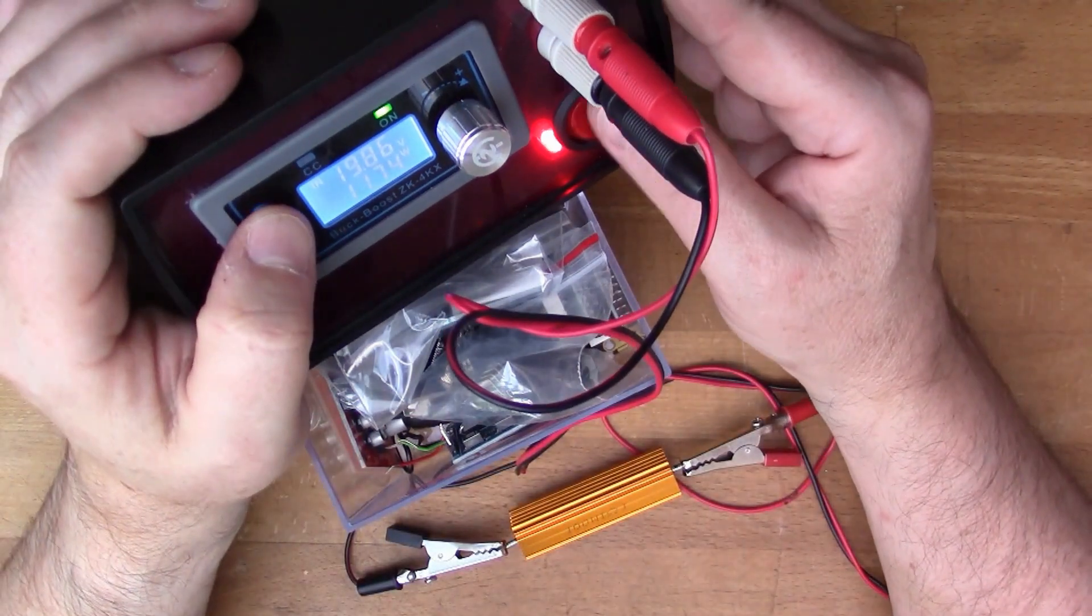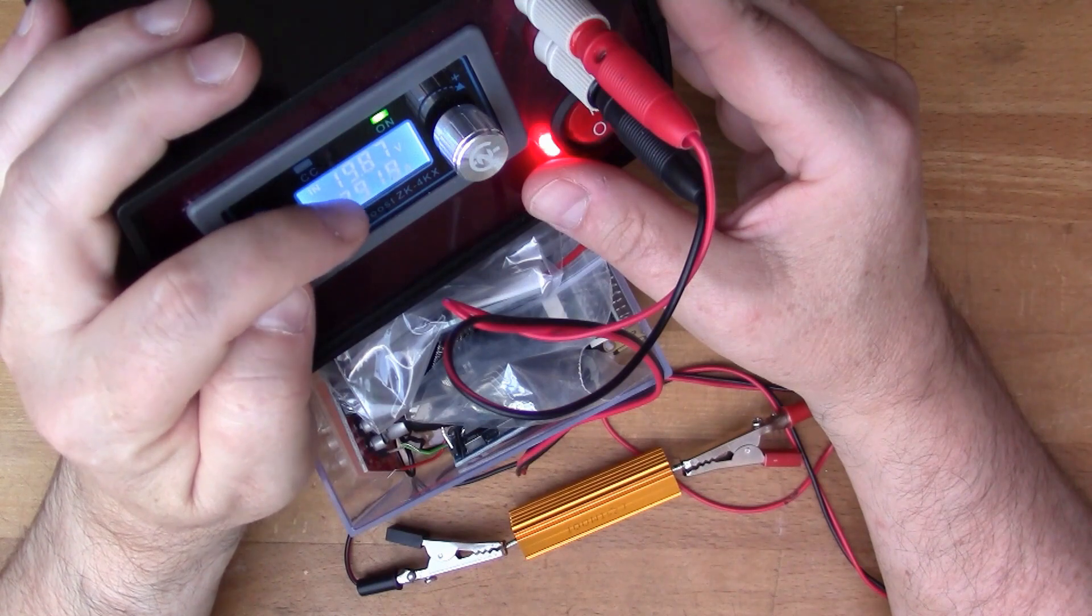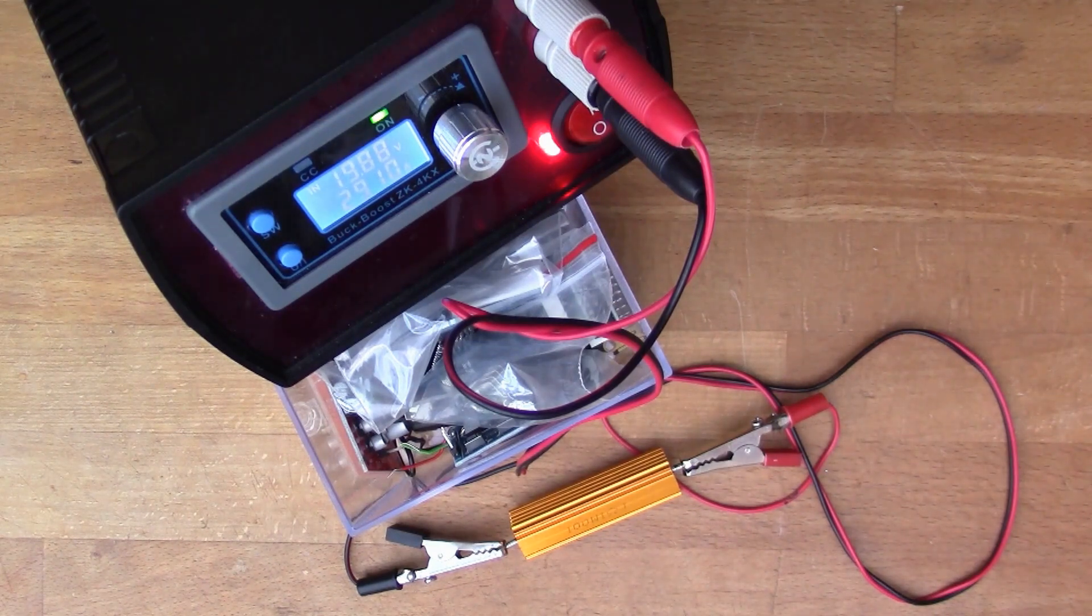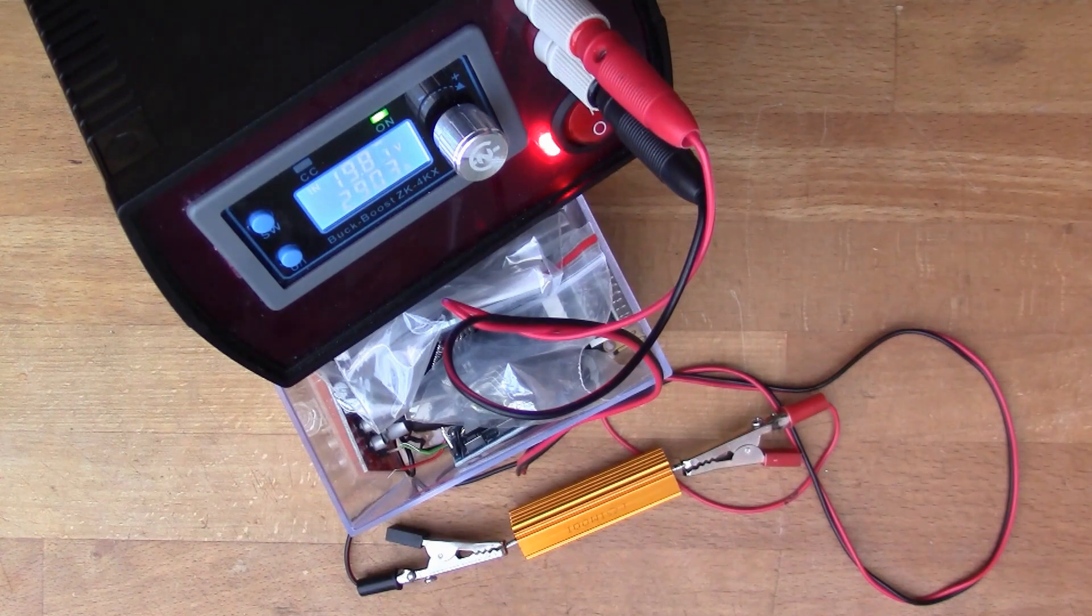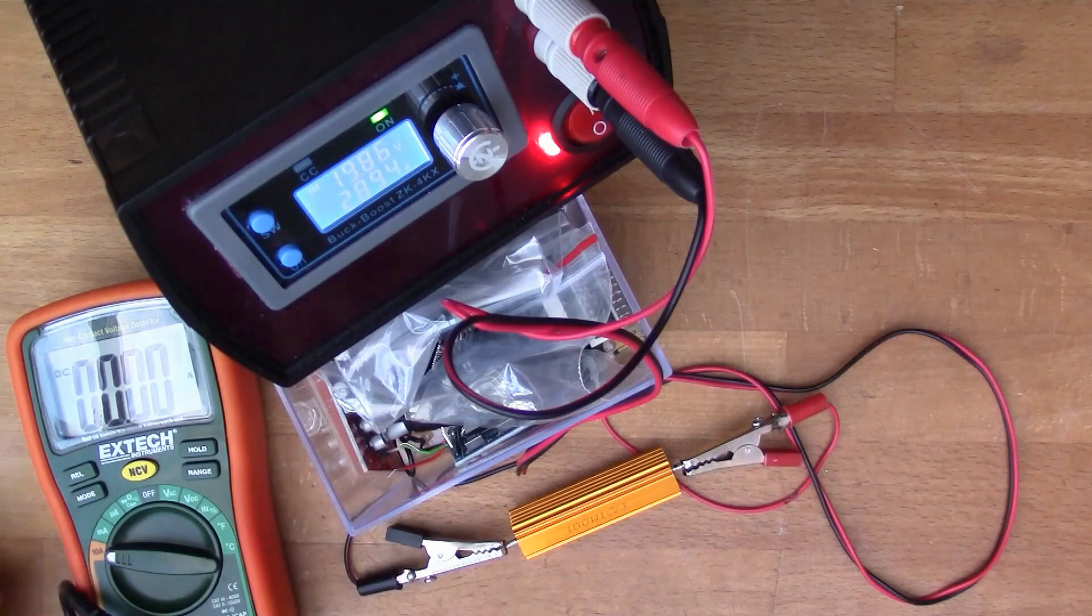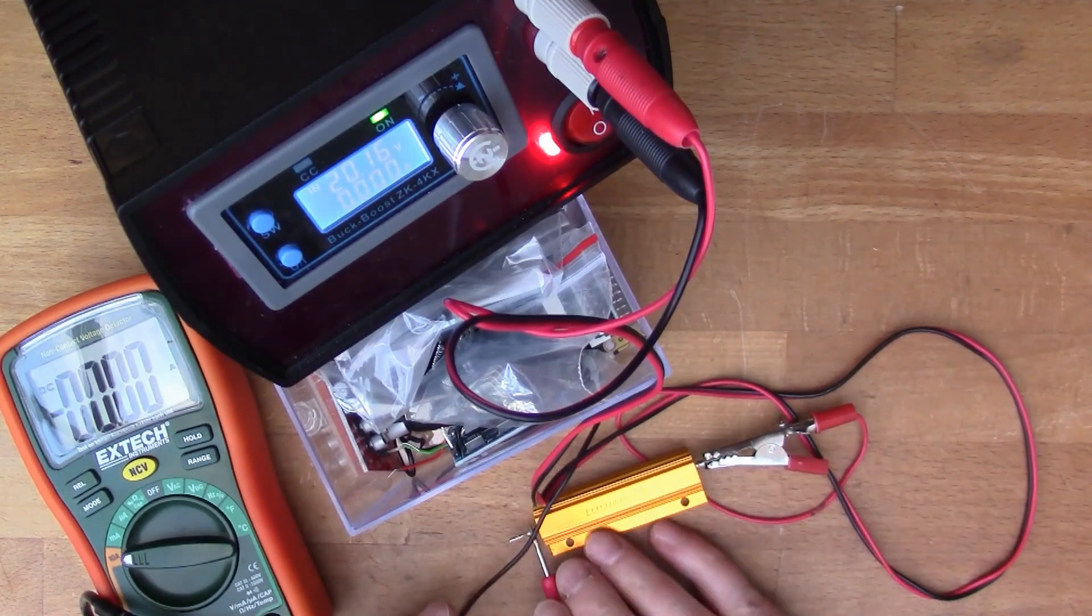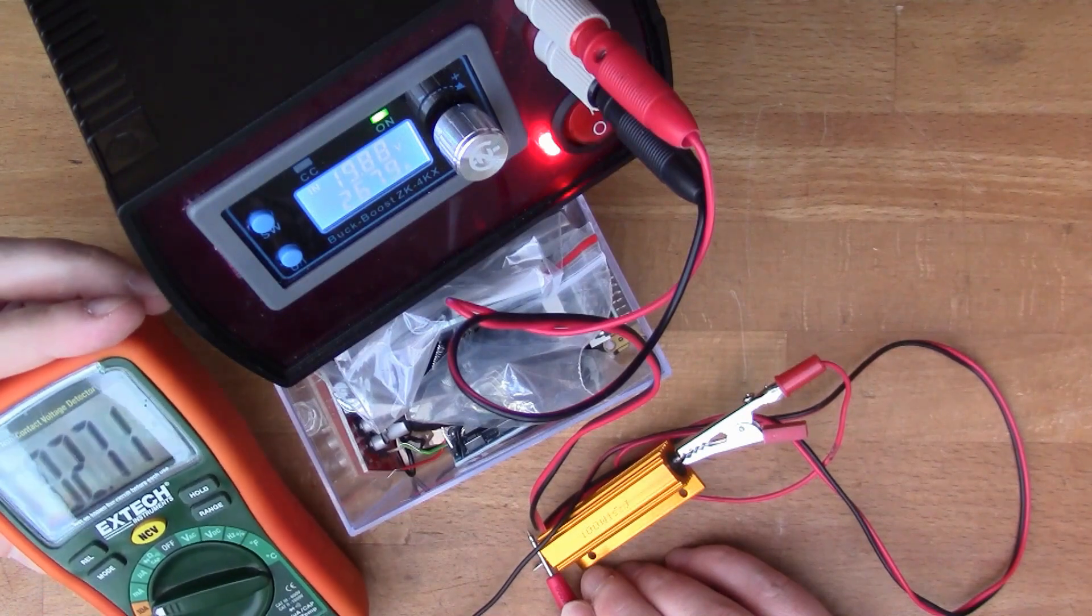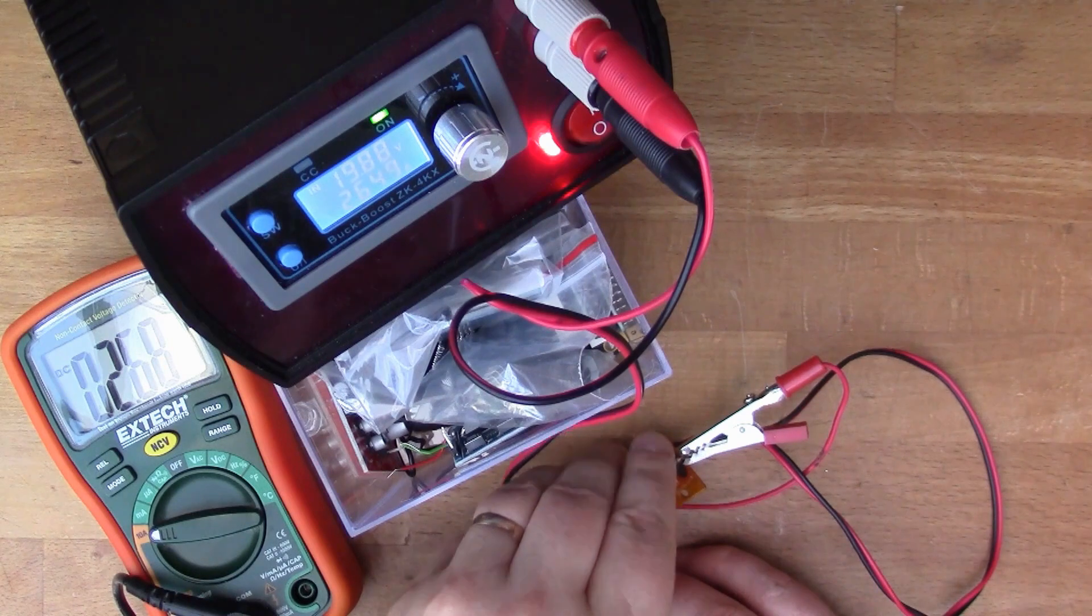It's not getting particularly hot. Maybe I can put the multimeter in here. I do have a 10 amp range on my multimeter here. Oh, it's getting warm now. Wow, that's really hot. Yeah, so the multimeter says 2.7 amps. That's almost too hot to touch now.